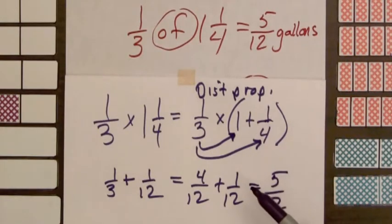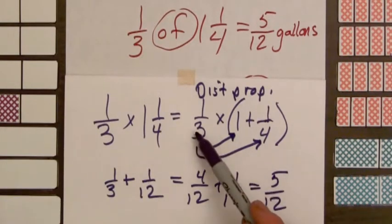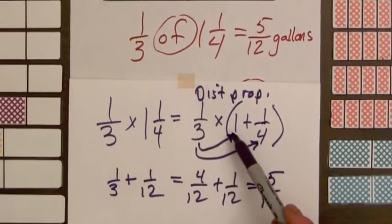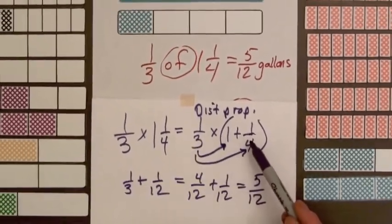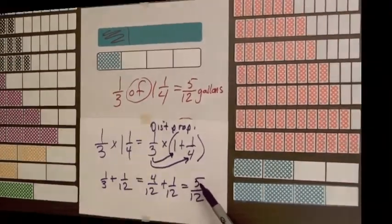To multiply a fraction times a mixed number, multiply the fraction times the whole number part, then the fraction times the fraction part, and add the two results.